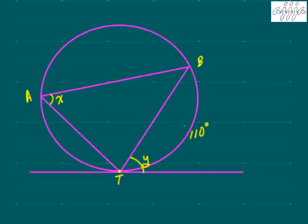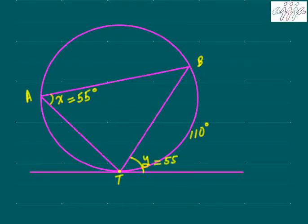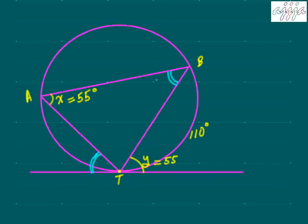Quickly going over another example: the central angle of BT is 110 degrees, so automatically the inscribed angle is half of that — 55 degrees. Now the tangent-chord angle x and the inscribed angle y are the same, so x is also 55 degrees. The tangent-chord angle equals the inscribed angle, which equals half the central angle.